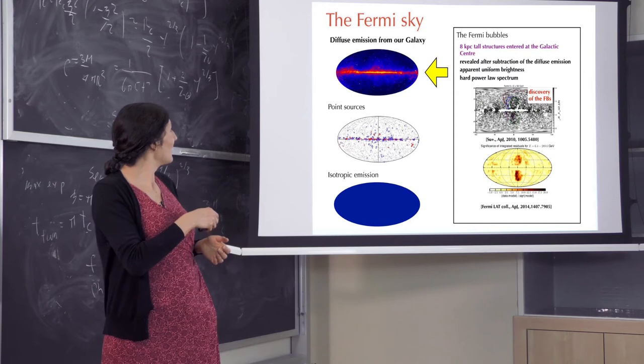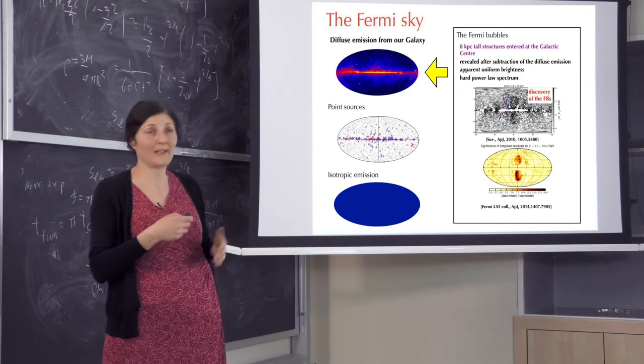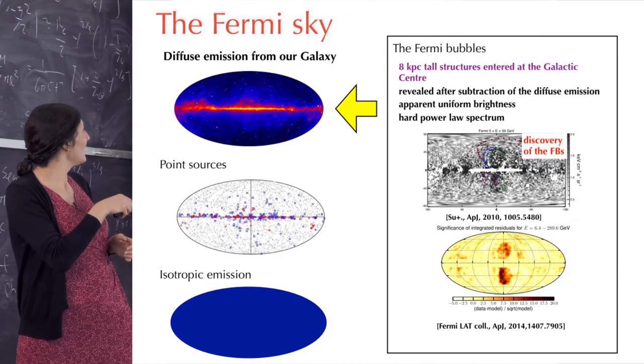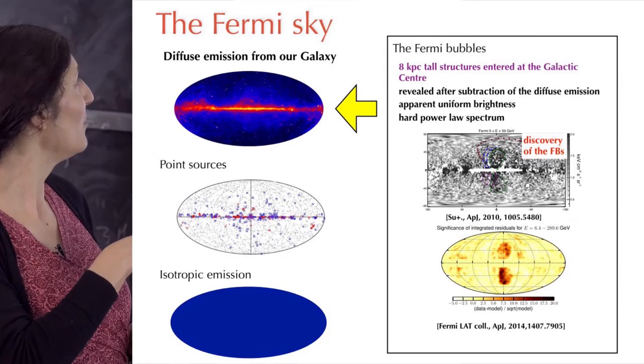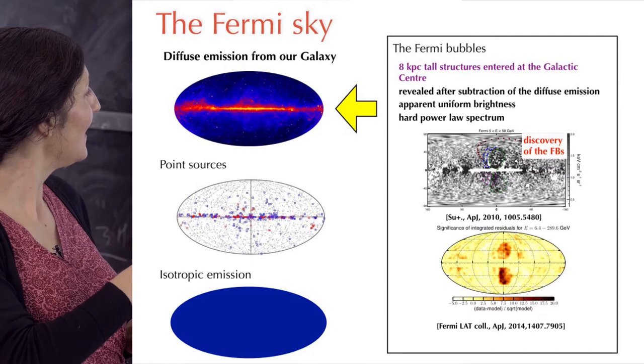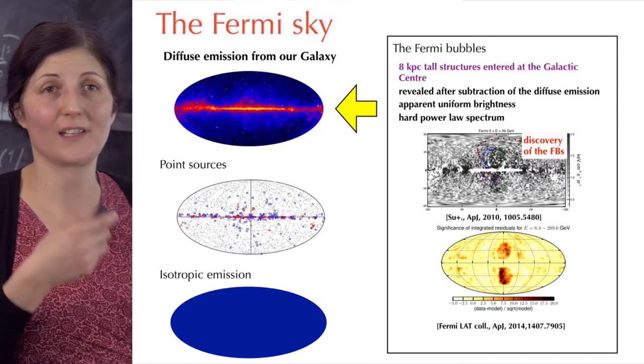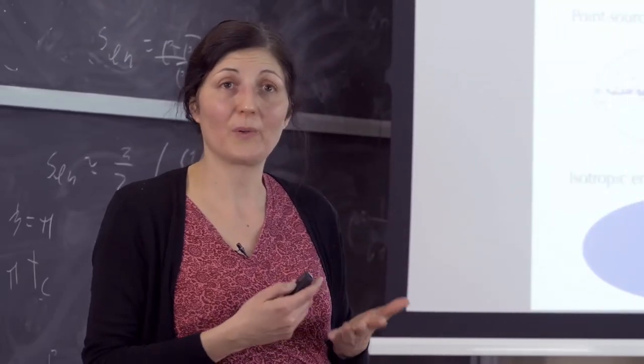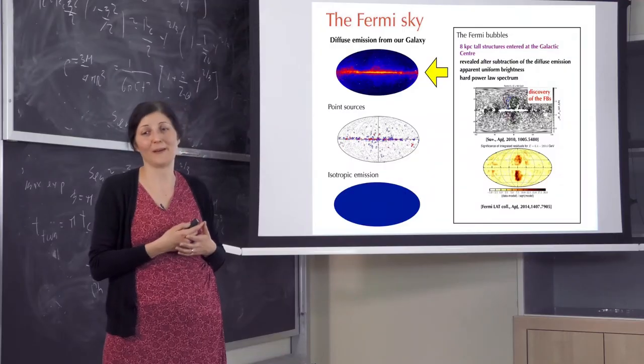Another thing that Fermi discovered if one basically removes this very bright emission are so-called Fermi bubbles. Maybe you can see it around here, but once when you remove the plane, you basically see these huge structures that come from the galactic center. They're called Fermi bubbles. They're a big surprise in science, actually. Nobody expected them to be there.